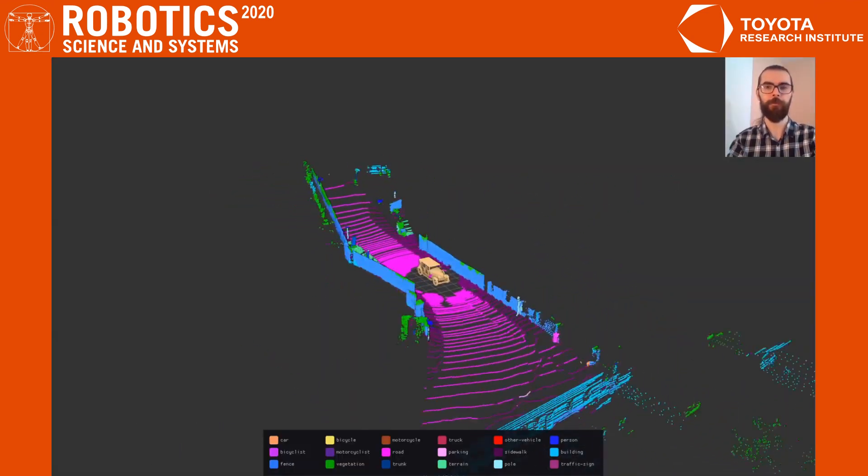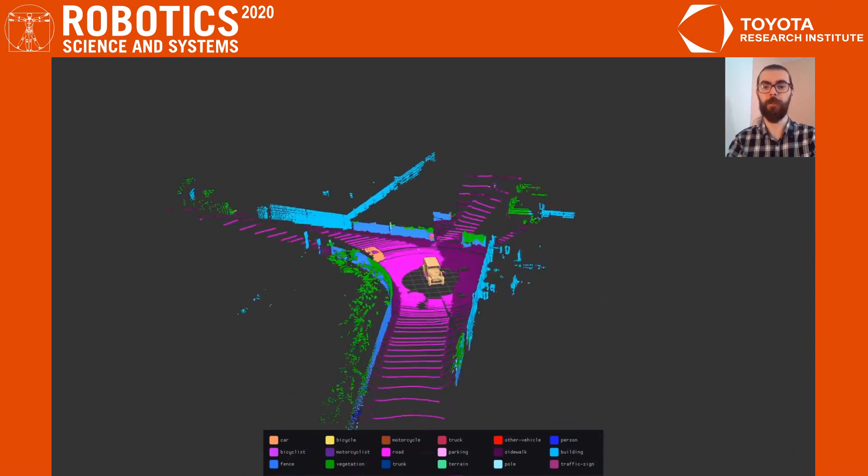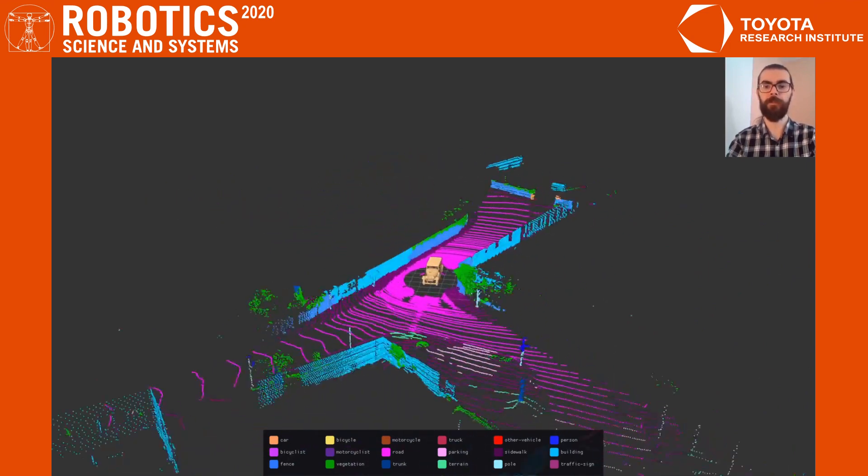Here we show results of the SemanticKITTI dataset, which consists of sequential LIDAR scans and we segment them into 19 classes.